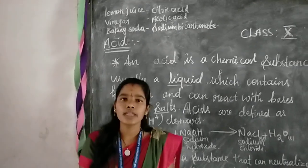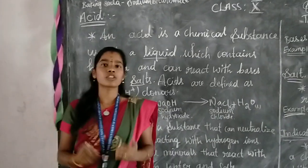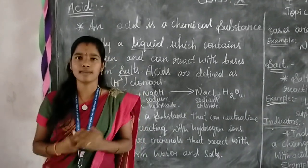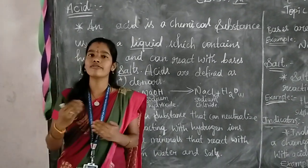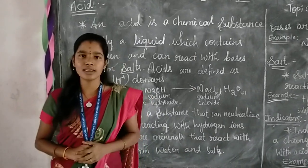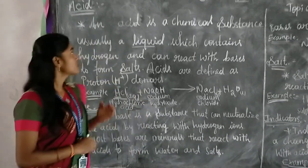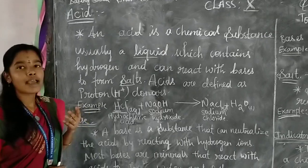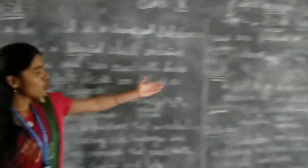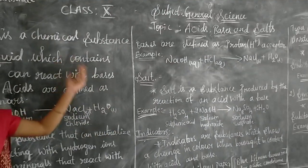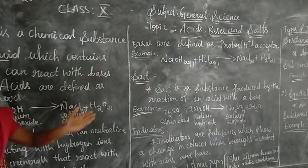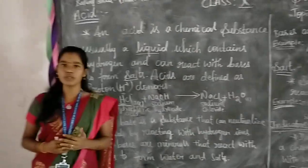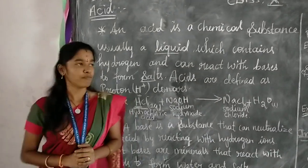Before entering into the actual topic, you must know some certain terminologies — then only will you understand the lesson very easily. The basic terminologies you will learn today are: acid, base, salt, indicators, synthetic indicators, and natural indicators.